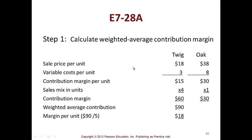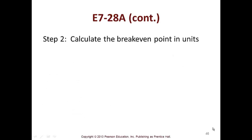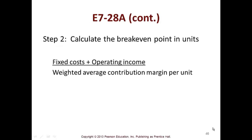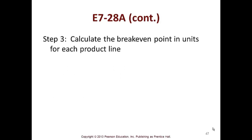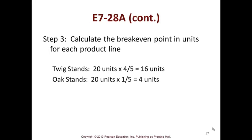Here's a bigger problem: E7-28A. I'll go through it quickly so you can see it and then try it on your own. Calculate the weighted average contribution margin for a twig and an oak — all information is given, and it comes out to $18 per unit. The second part calculates the break-even point in units using the equation. Step three then calculates the break-even point in units for each product line individually — the twig and the oak.